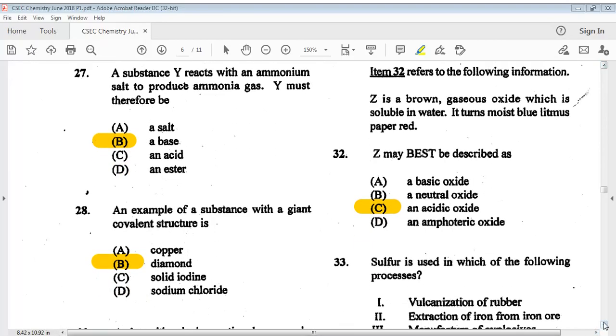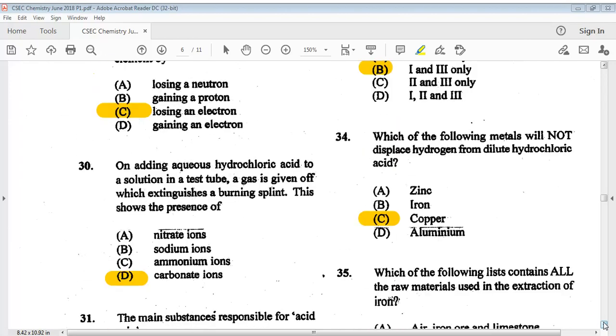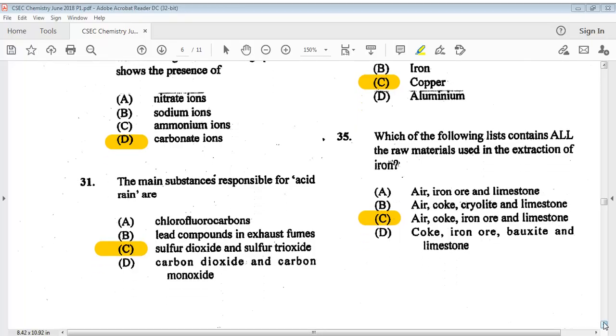Let's go on to number thirty-three. Sulfur is used in which of the following processes? 1. Vulcanization of rubber. 2. Extraction of iron from iron ore. 3. Manufacture of explosives. The answer is B, 1 and 3 only. Question thirty-four: which of the following metals will not displace hydrogen from dilute hydrochloric acid? The answer is C, copper. Question thirty-five: which of the following list contains all the raw materials used in the extraction of iron? The answer is C, air, coke, iron ore and limestone.